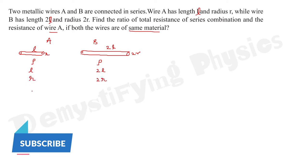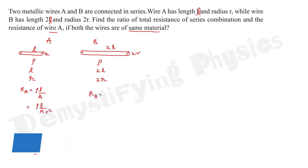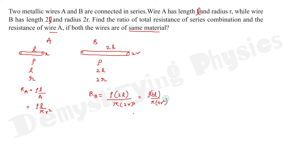The resistance of wire A is rho·l divided by area, where area is pi·r squared. The resistance of wire B is rho·2l divided by pi·(2r) squared, which becomes rho·2l over pi·4r squared, simplifying to rho·l over 2·pi·r squared.